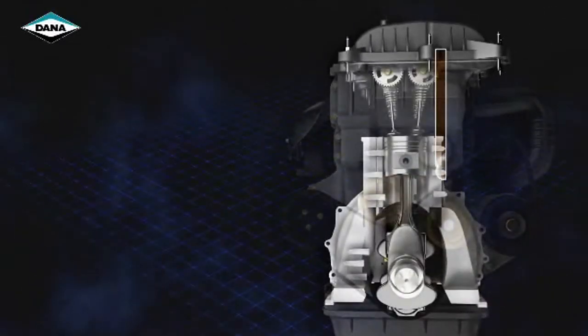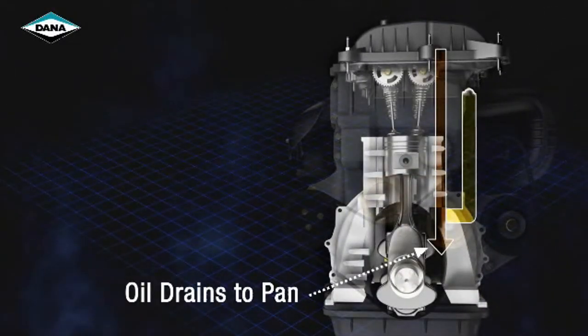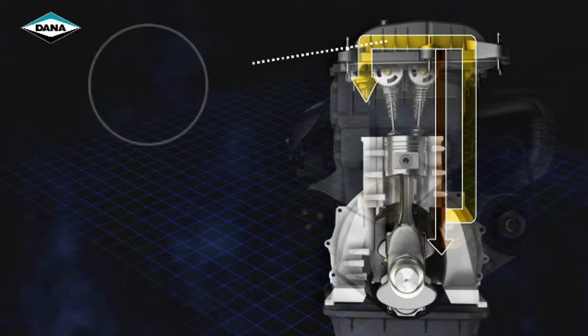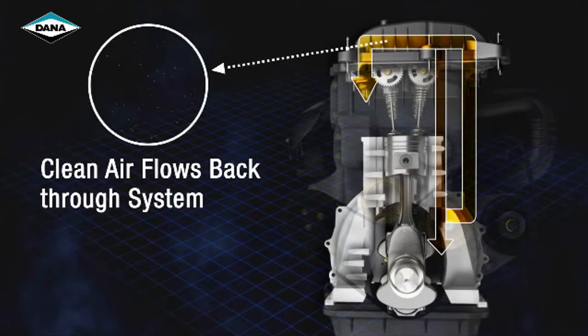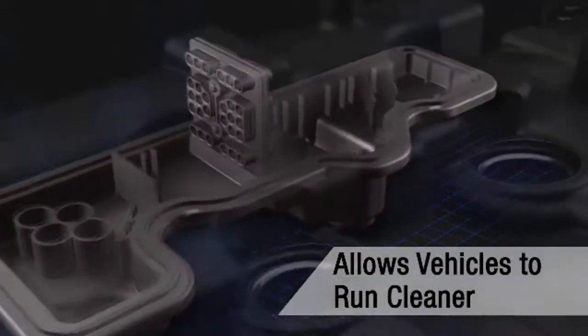Under specific conditions, a valve will open to empty the collected oil from the cover to the oil pan below. That way, the multi-twister separators allow clean air to flow back through the intake system for combustion. This highly efficient, extremely reliable air-oil separator system allows vehicles to run cleaner with no maintenance required.